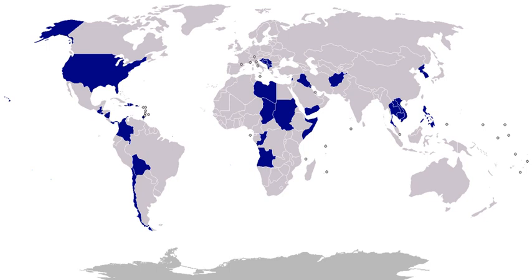1975, South Vietnam: on April 30, 1975, President Ford reported that a force of 70 evacuation helicopters and 865 Marines had evacuated about 1,400 U.S. citizens and 5,500 third-country nationals and South Vietnamese from landing zones in and around the U.S. Embassy, Saigon, and Tan Son Nhut Airport. 1975, Cambodia, Mayaguez Incident: on May 15, 1975, President Ford reported he had ordered military forces to retake the SS Mayaguez, a merchant vessel which was seized from Cambodian naval patrol boats in international waters and forced to proceed to a nearby island.